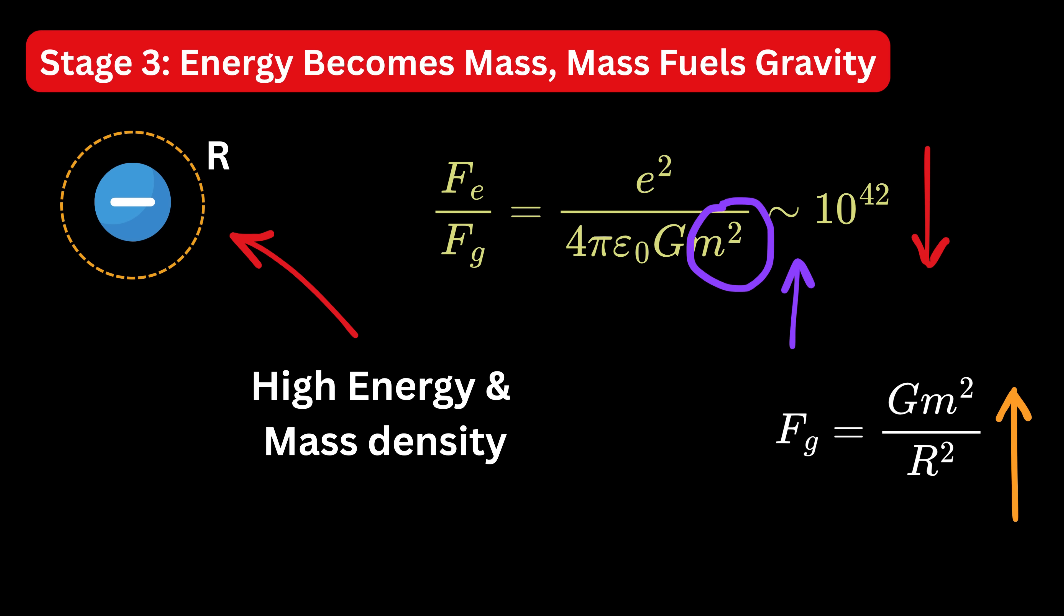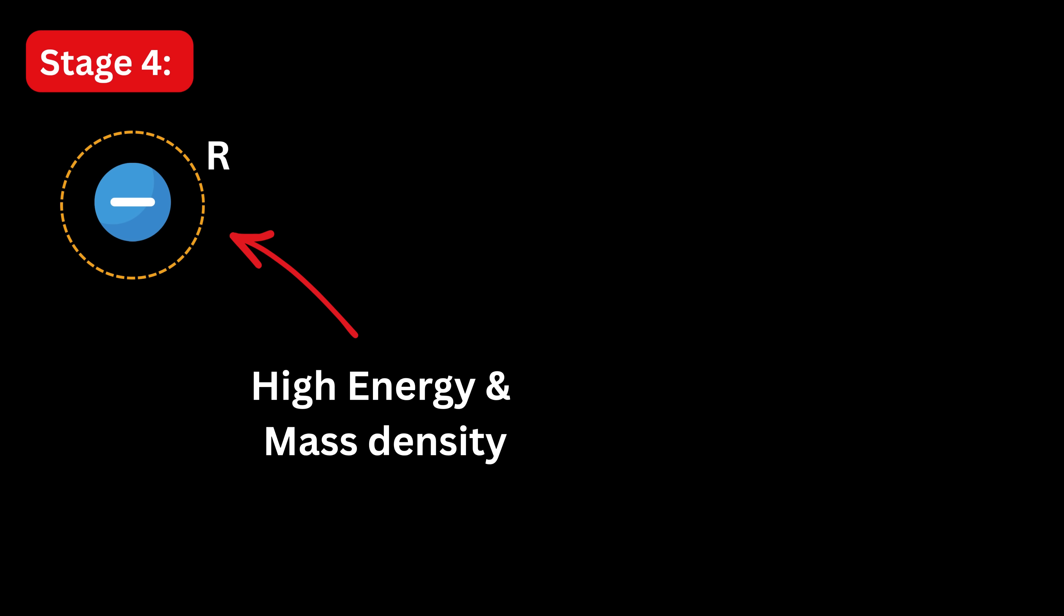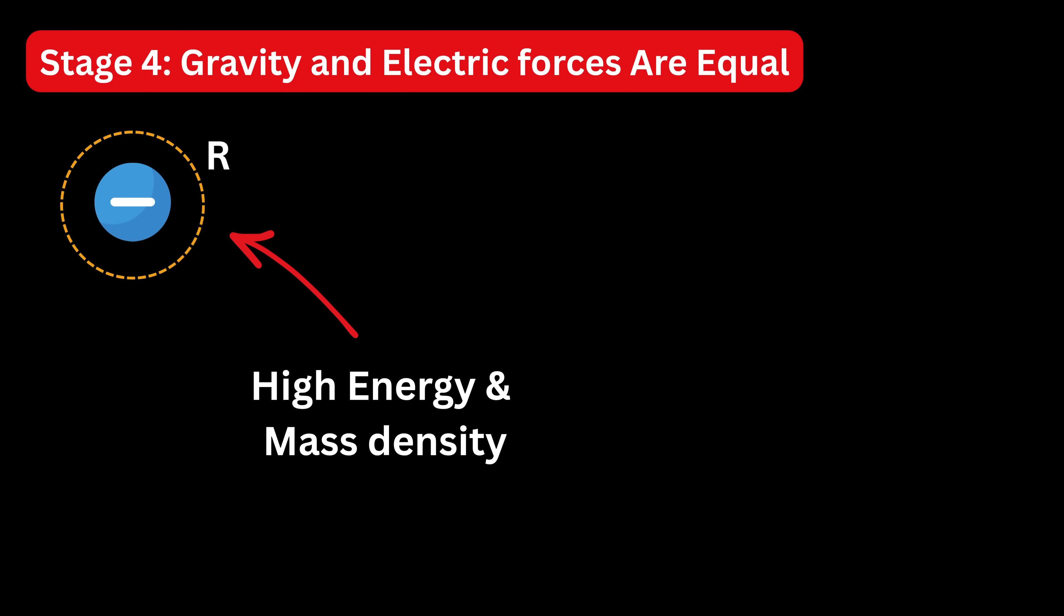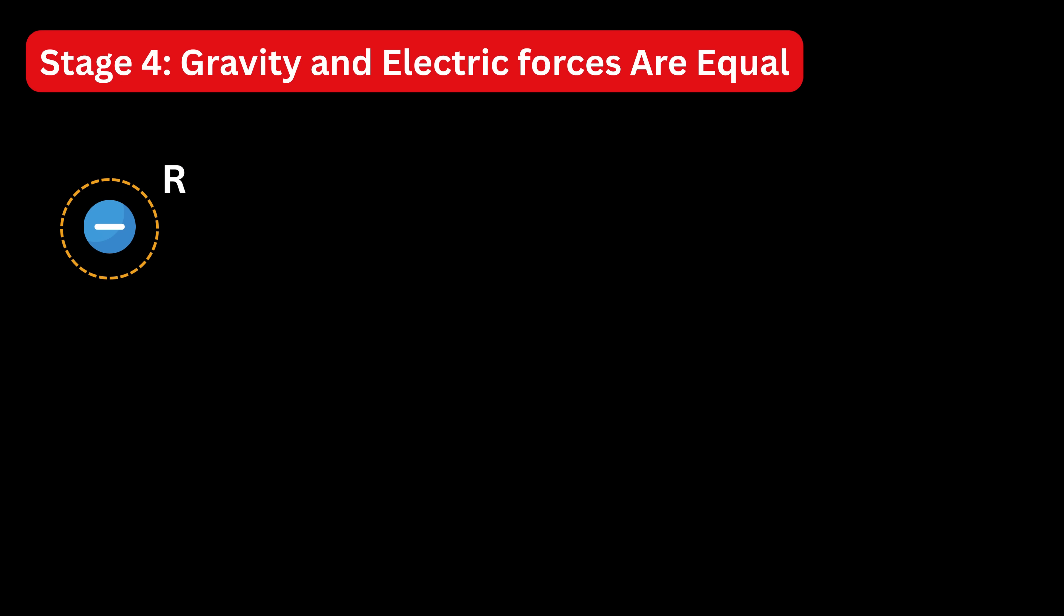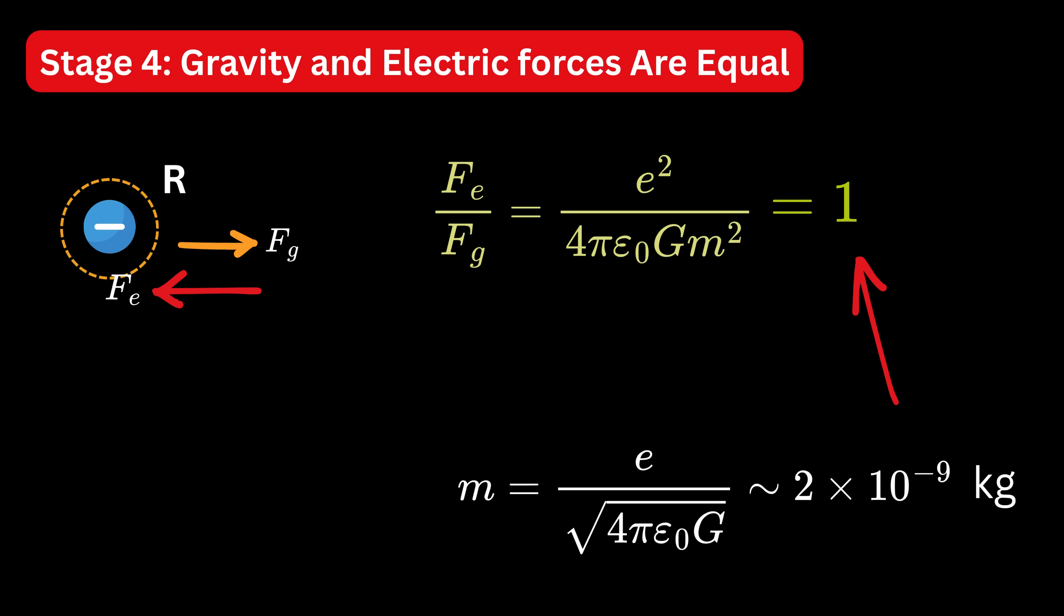Now we enter stage four, when gravity and electric forces are equal. Imagine going even further, squeezing space so tightly that the gravitational attraction between particles becomes as strong as their electric repulsion. This refers to confining energy and matter into an incredibly small volume. If we set the ratio of electric force to gravitational force as one and use the known constants, we find the necessary mass becomes huge. This isn't about actual particles with that mass. It's about the effective mass energy that would need to be concentrated in a tiny region to make gravity this strong.